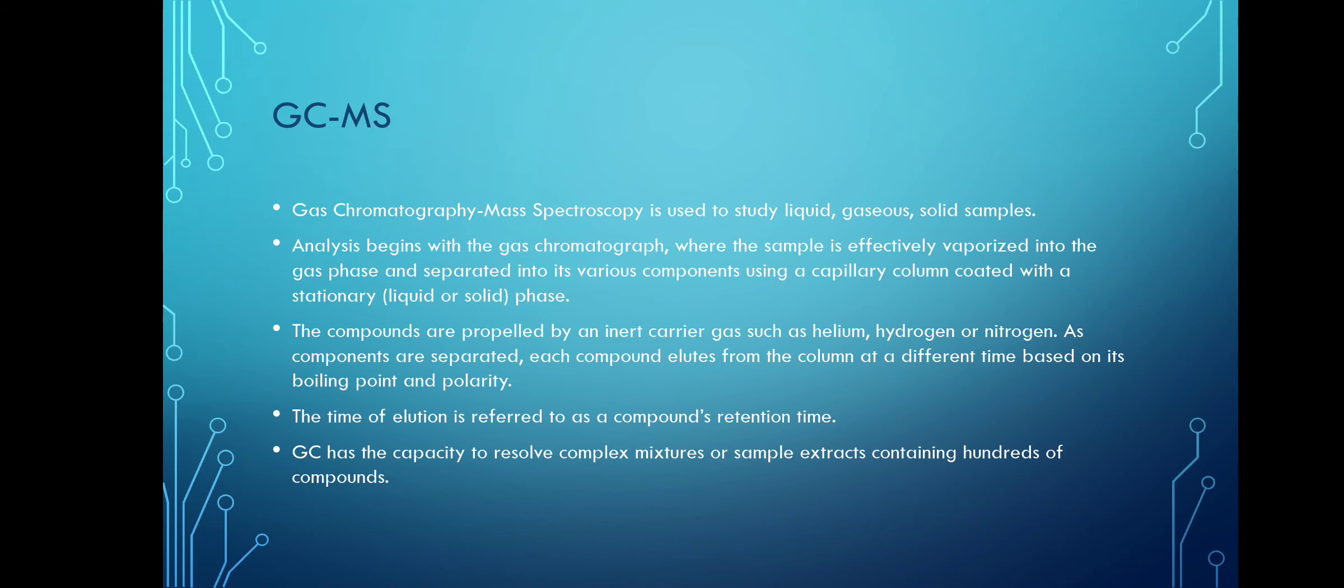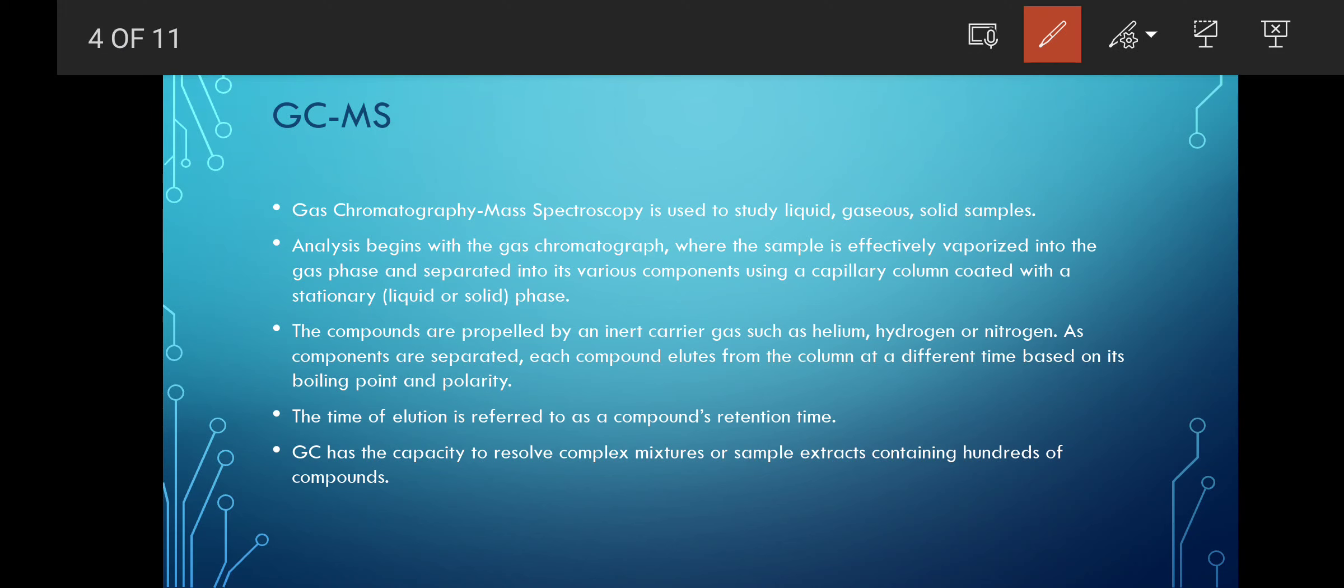So let us first see what is GCMS. GC in the last lecture we have seen - gas chromatography. So here we are combining it with mass spectroscopy. Mass spectroscopy we have also learned in the previous video lecture. So gas chromatography mass spectroscopy studies all three types of samples: liquid, gaseous and solid. They analyze being with the chromatograph where the sample is effectively vaporized.